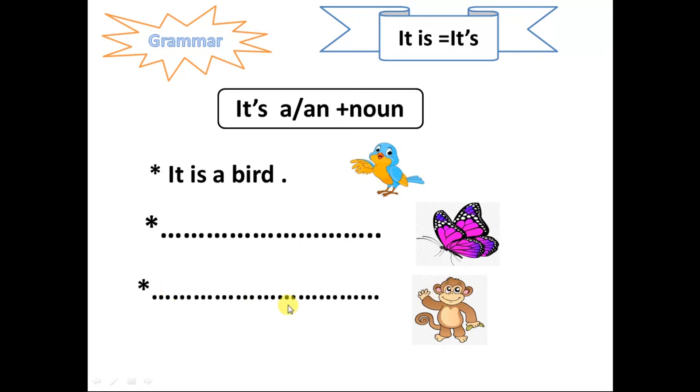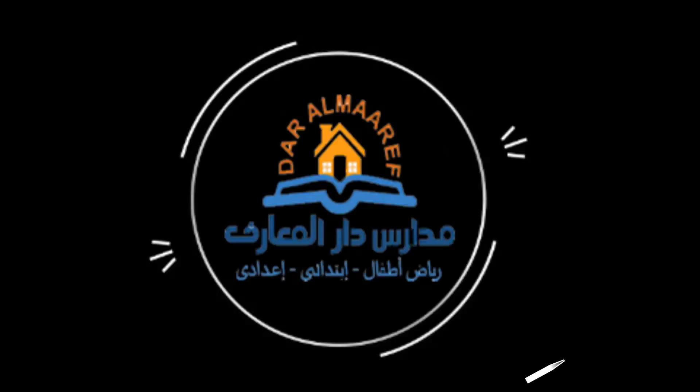It's a bird. It's a or an, butterfly? Yeah, a butterfly. Monkey, it's a or an? A, a monkey. Very good.